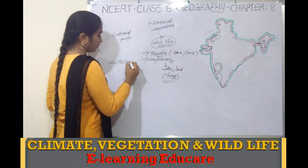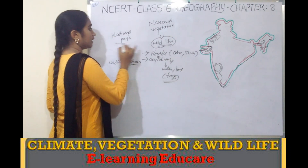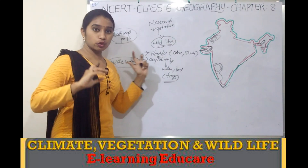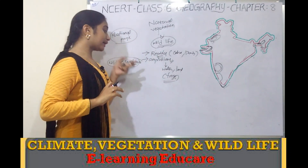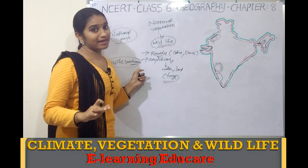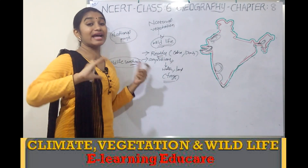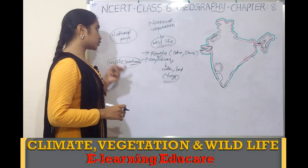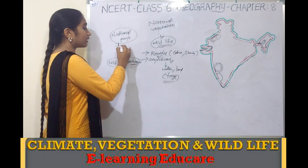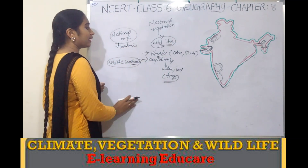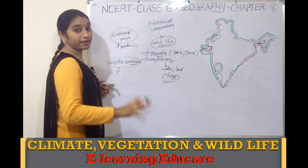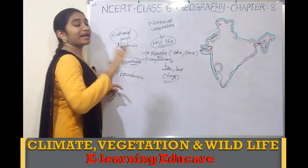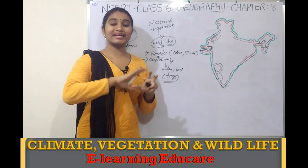National parks and wildlife sanctuaries are areas established to conserve animals, the natural environment, and the natural habitat of the animal kingdom. One key difference: national parks have separate defined boundaries, while wildlife sanctuaries do not have strict boundaries.